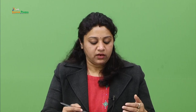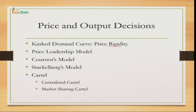For the price and output decisions in oligopoly, we have a few models. We will start with the kinked demand curve, also called the price rigidity model. Then we will discuss the price leadership model, Cournot's model, Stackelberg's model, and the cartel model — a collusive form — which can be either a centralized cartel or a market sharing cartel.